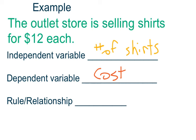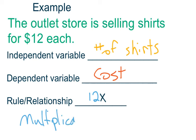The independent variable is the number of shirts and the dependent variable is the cost. If the shirts are $12 each, you can determine the cost by multiplying the number of shirts times 12. So the specific relationship for this one is 12x, where you multiply the number of shirts times 12. This one is specifically a multiplicative relationship.